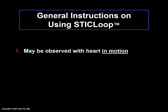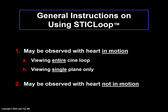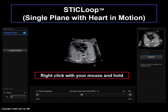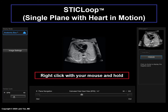When observing the STICLOOP, this can be done with the heart in motion — in which the entire CINE loop can be observed — or just a single plane in motion. To observe only a single plane of the fetal heart in motion, this is done by pressing the blue arrow button seen on the ultrasound monitor screen. Another way is to right-click on the image with the mouse and hold if one is working on a computer. The single plane of the heart is then in motion.